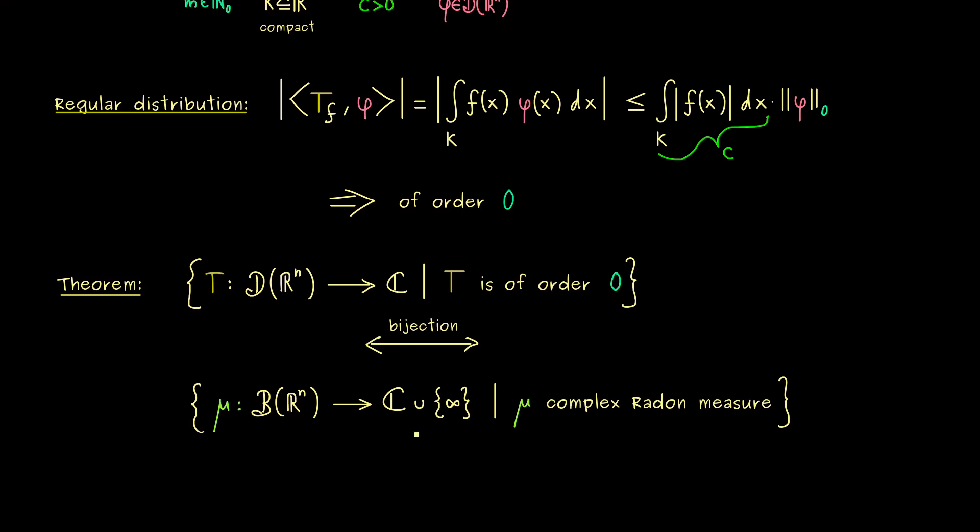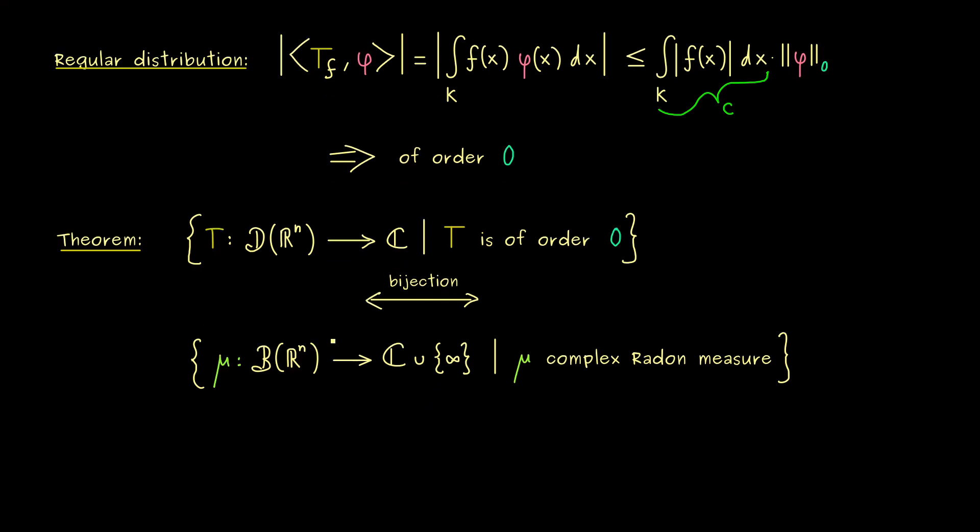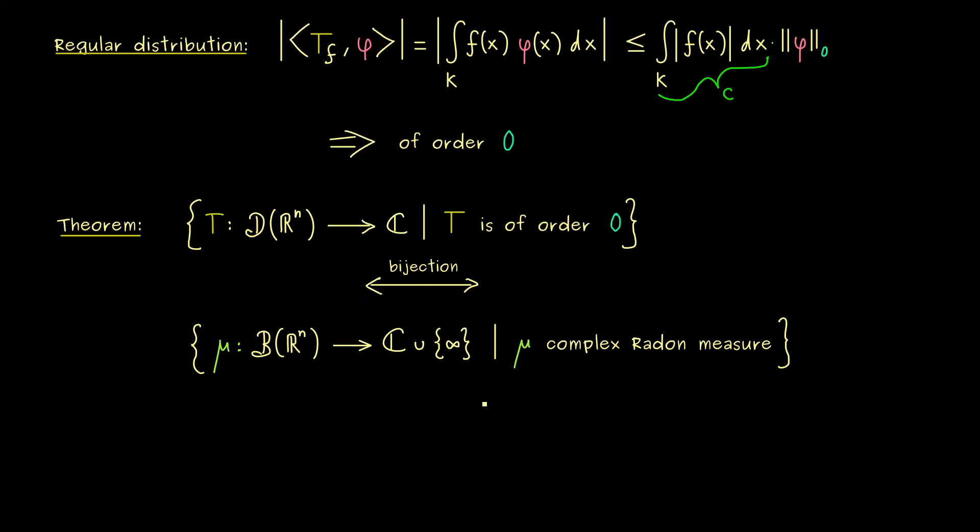Now I don't give you the whole proof, but we can see how this bijection should look in the one direction. Indeed, for the complex measure μ, we can define the distribution T_μ. And now it will not surprise you, we will define that with an integral, simply because we can just integrate with respect to μ. So more precisely, we have φ(x) dμ(x).